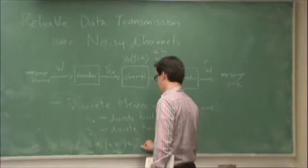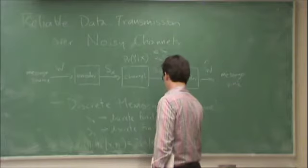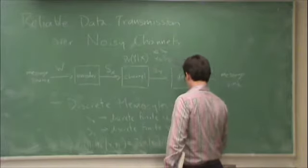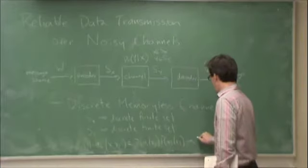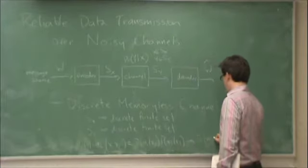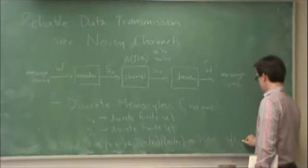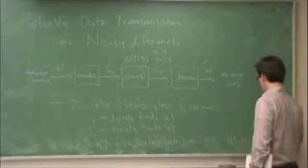in other words, this would be equal to probability y1 given x1 times probability y2 given x2. And more generally, probability y1, y2, and so on up to yn, given x1, x2, up to xn,